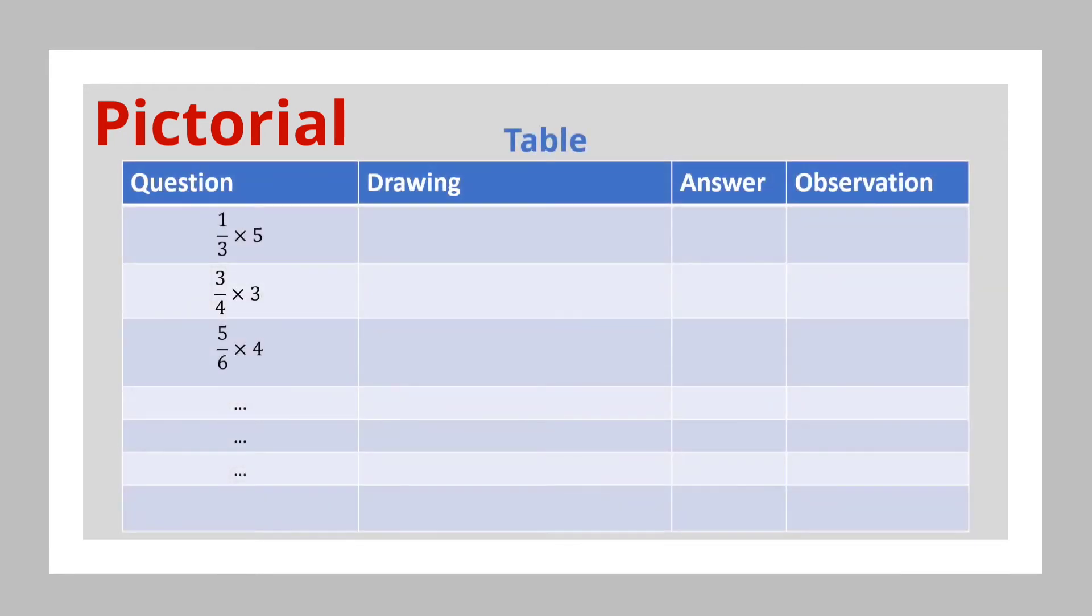At the pictorial stage, the teacher needs to decide on what form the picture will take. This would be dependent on the type of transition that is necessary. In other words, you need to form a relationship between the concrete stage and the pictorial stage. I will use a table in this case. Note that I'm using the same example because we want to show the transition from the concrete stage to the pictorial stage.